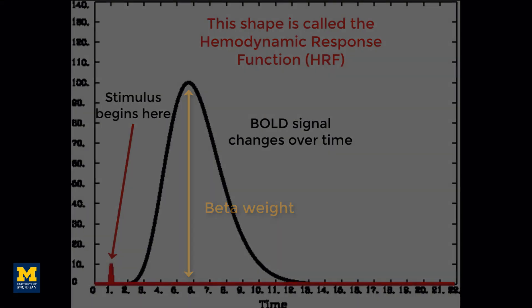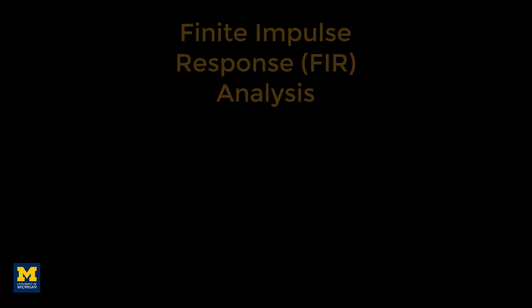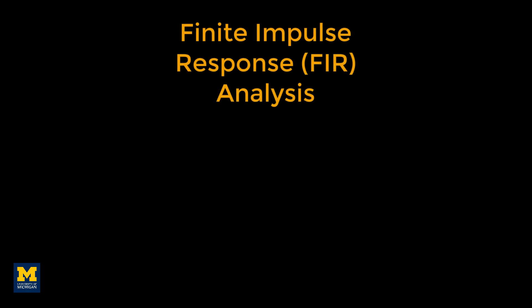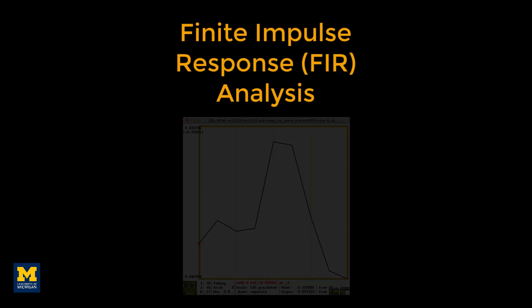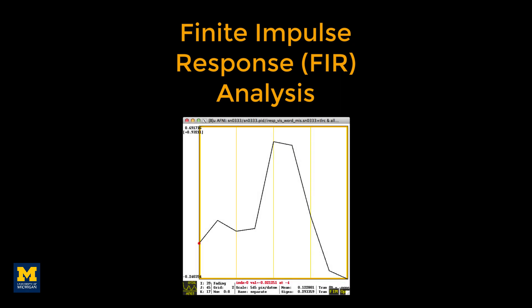This method is known as a finite impulse response or FIR model, in which you specify the length of the time window and how many time points you want to estimate. Instead of estimating the average amplitude of the entire BOLD response, you estimate the average activity at each time point.